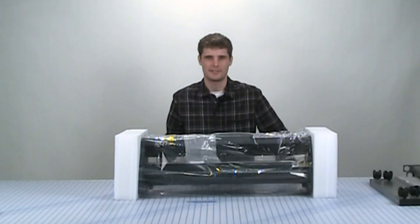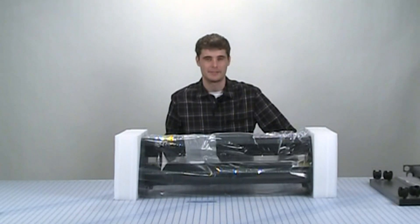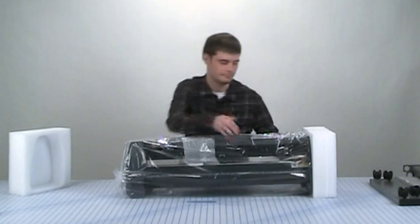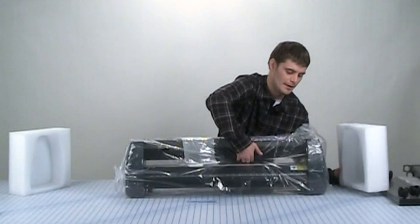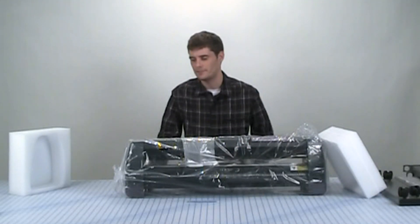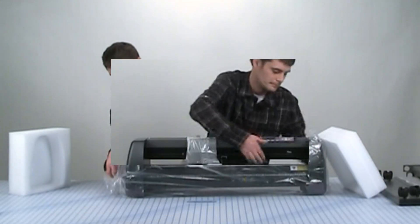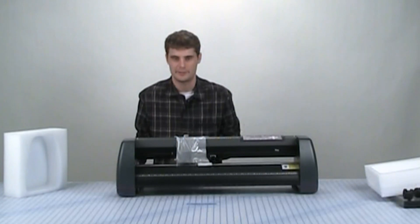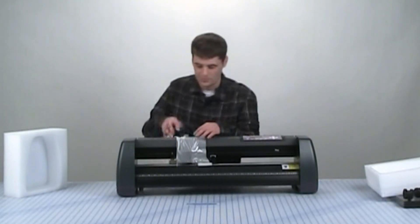Once we've removed all the pieces from the box it's time to carefully take off the packing materials. Go ahead and pop each end cap off. And next on the right side of the cutter there's going to be a little plastic clip tie that we'll have to clip. Now you'll notice there's also some clip ties along the front to protect the carriage during shipping. We're going to go ahead and clip these as well.